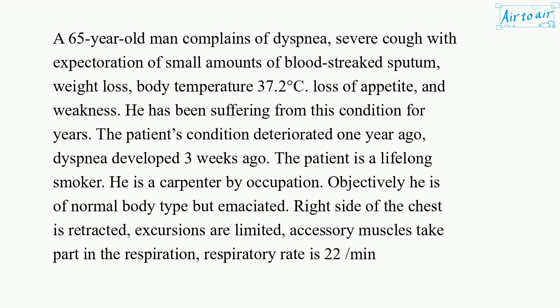The patient is a lifelong smoker. He is a carpenter by occupation. Objectively, he is of normal body type but emaciated. The right side of the chest is retracted. Excursions are limited; accessory muscles take part in the respiration. Respiratory rate is 22 per minute.